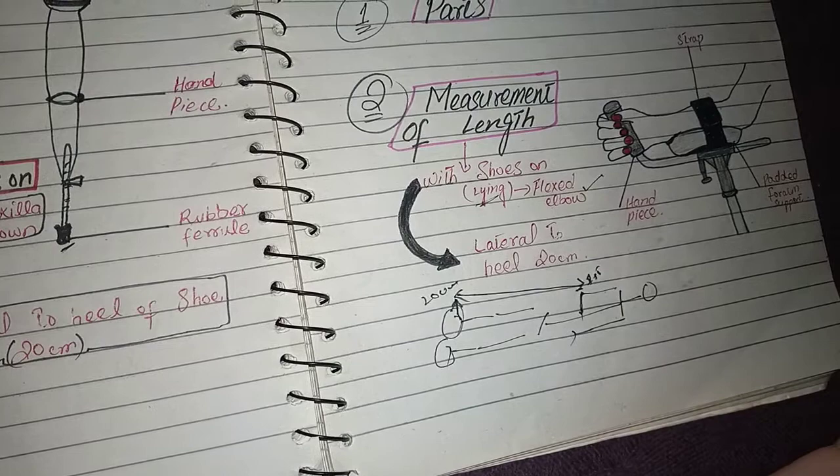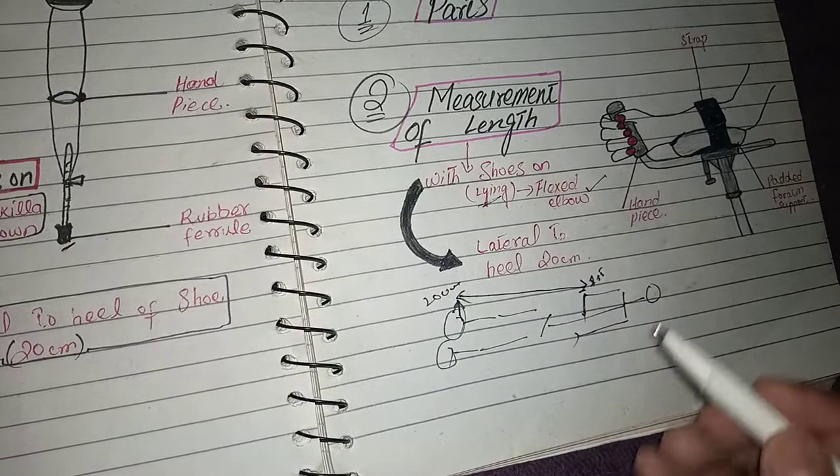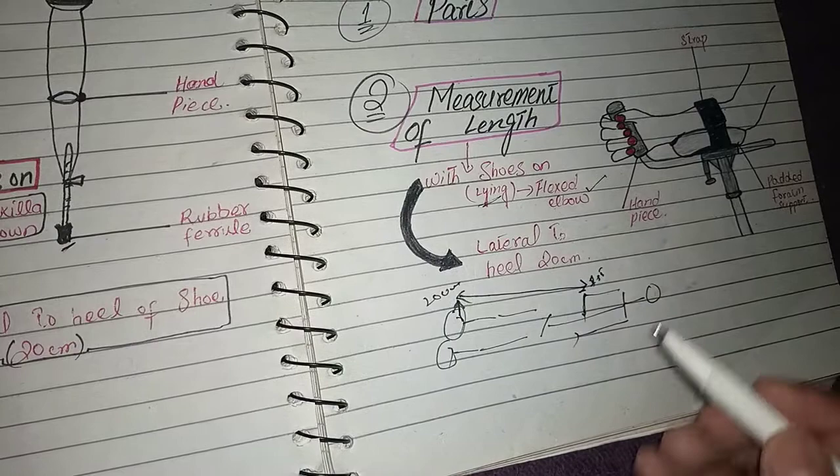The elbow is flexed to 90 degrees and the length is taken. The first point is from the flexed elbow to the last point, which is 20 cm lateral to the heel of the shoe. This is the measurement procedure for gutter crutch.